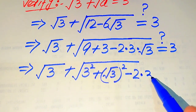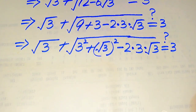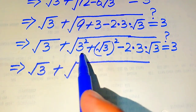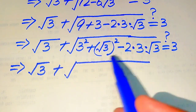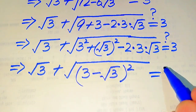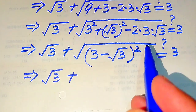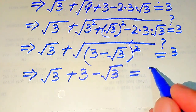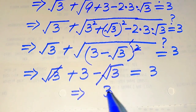We recognize this as the pattern a squared plus b squared minus 2ab. Combining all these terms, it is written as (3 minus square root of 3) whole squared. So we have: square root of 3 plus square root of (3 minus square root of 3) squared equals 3. The square and square root cancel, giving square root of 3 plus (3 minus square root of 3) equals 3. The positive and negative square root of 3 cancel, leaving 3 equals 3.